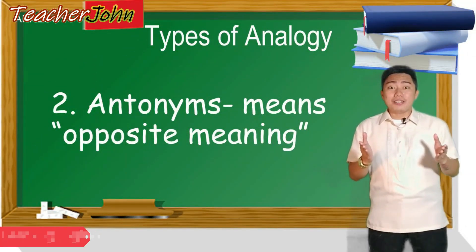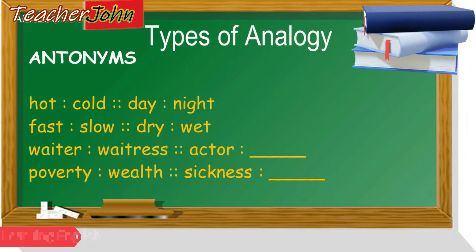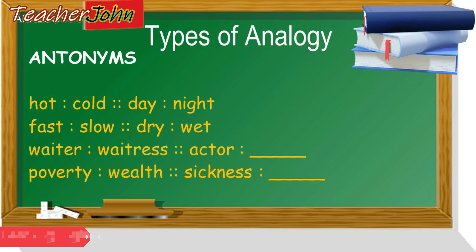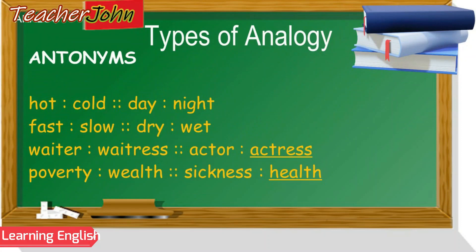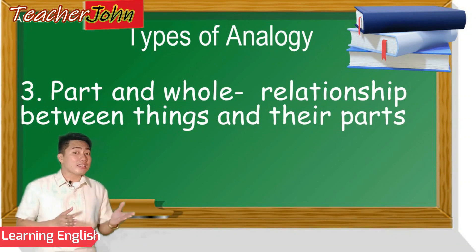Antonyms are words that have the opposite meaning. Read these examples with me: Hot is to cold as day is to night. Fast is to slow as dry is to wet. Waiter is to waitress as actor is to actress. Poverty is to wealth as sickness is to health.